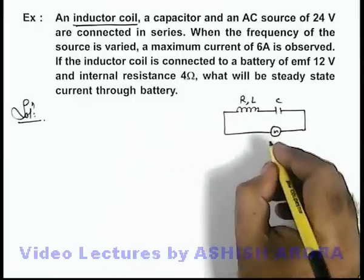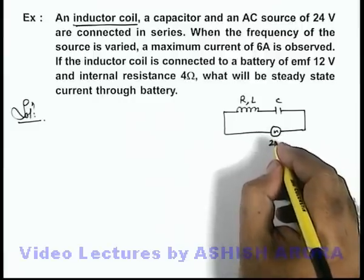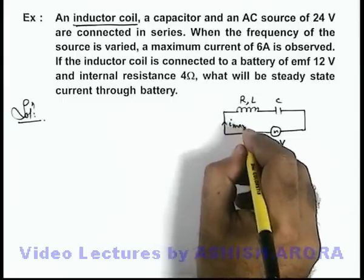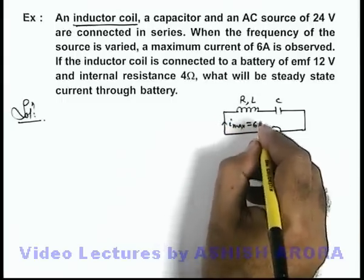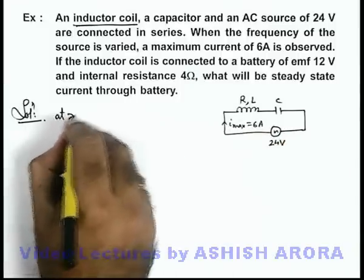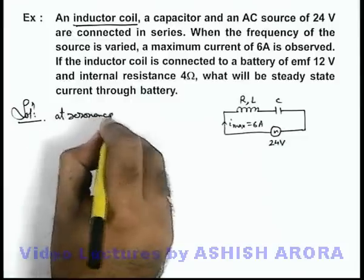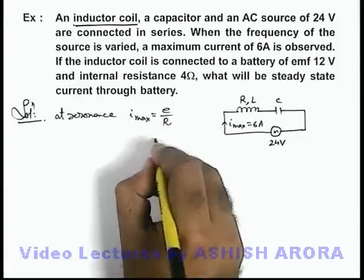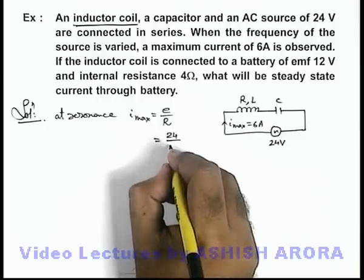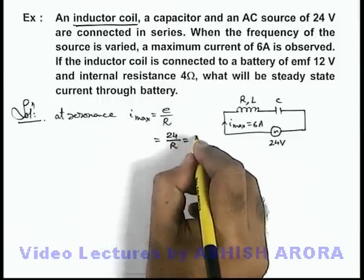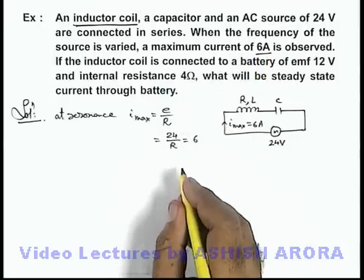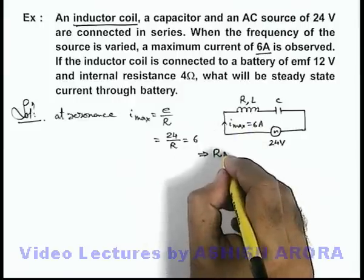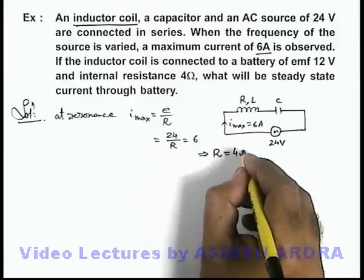Now in this situation, the AC source is 24 volt and the maximum current we are getting is 6 ampere. Then we know at resonance, I_max equals EMF divided by R, which can be written as 24 divided by R equals 6 ampere. This gives us the value of resistance in the inductor coil, which is equal to 24 by 6 — that is 4 ohms.